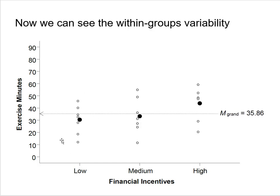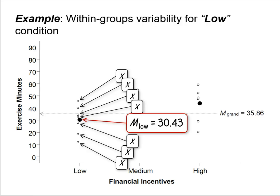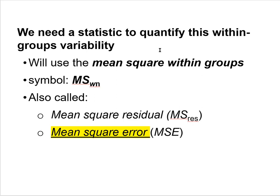Why is it called mean square error? Think of it this way: focus on one person in the low incentive condition who scored above the group mean. Why did this person engage in more exercise? We have no idea — maybe motivation, maybe age. Because we can't explain why they scored higher or lower, we call it error variability. It's unknown variability, which is why it's called mean square error.